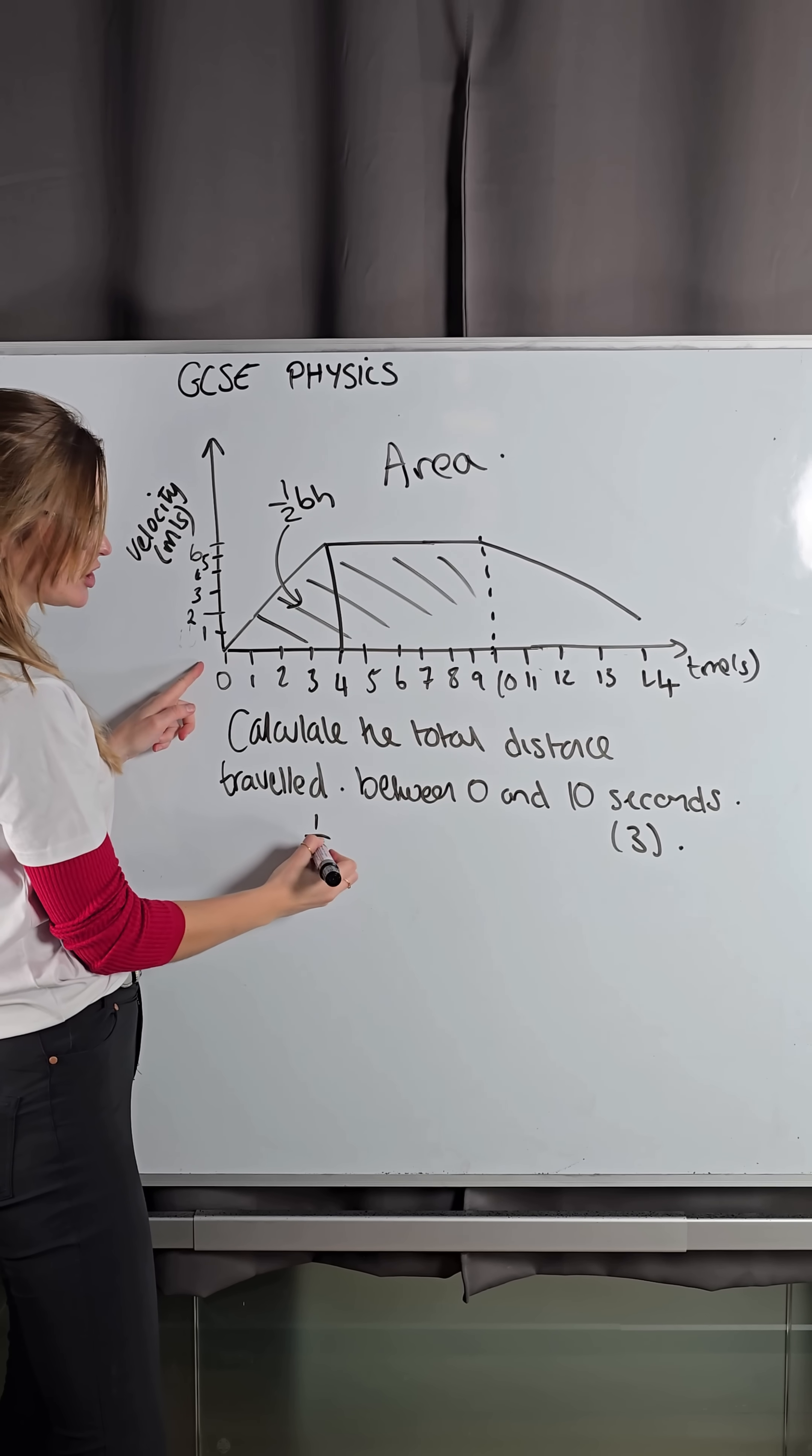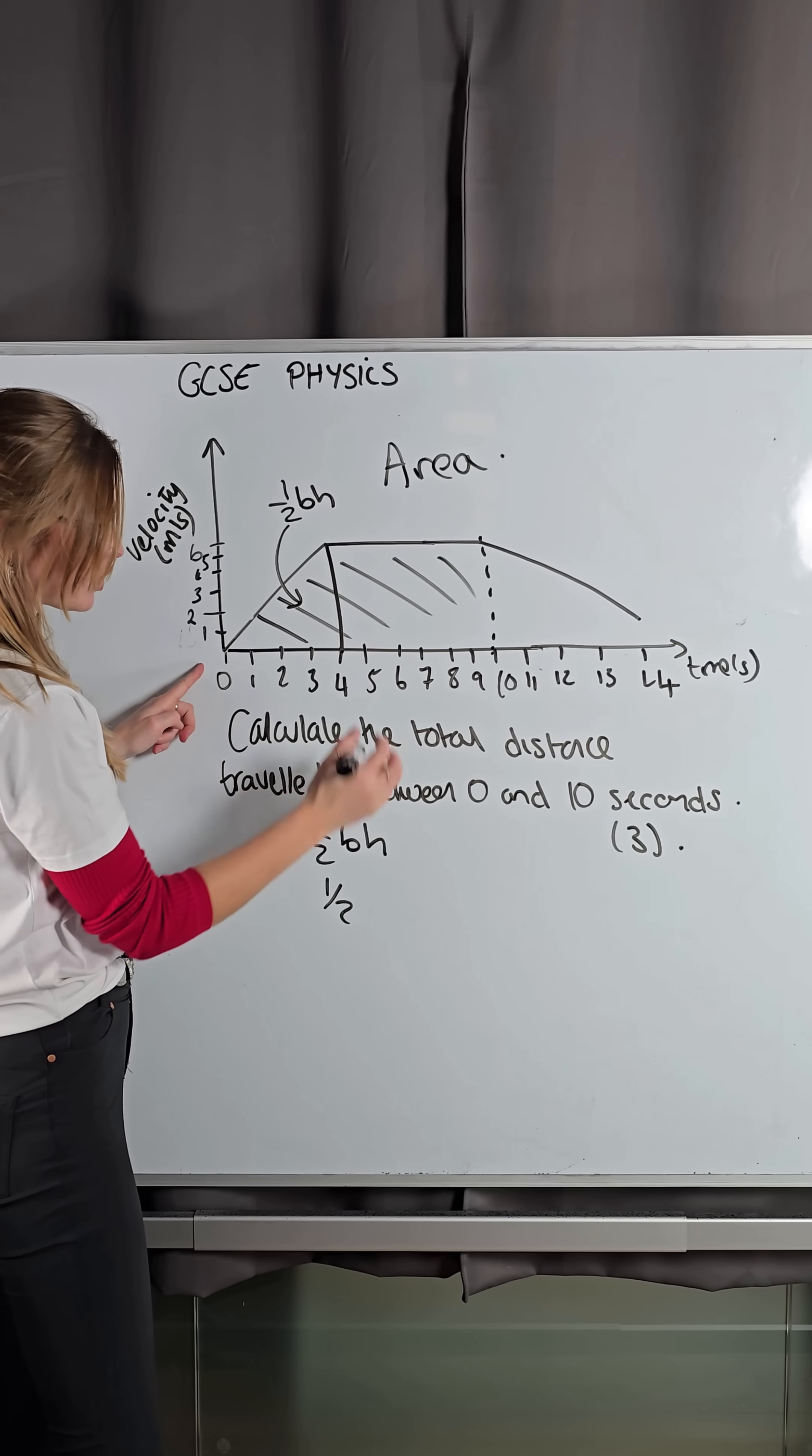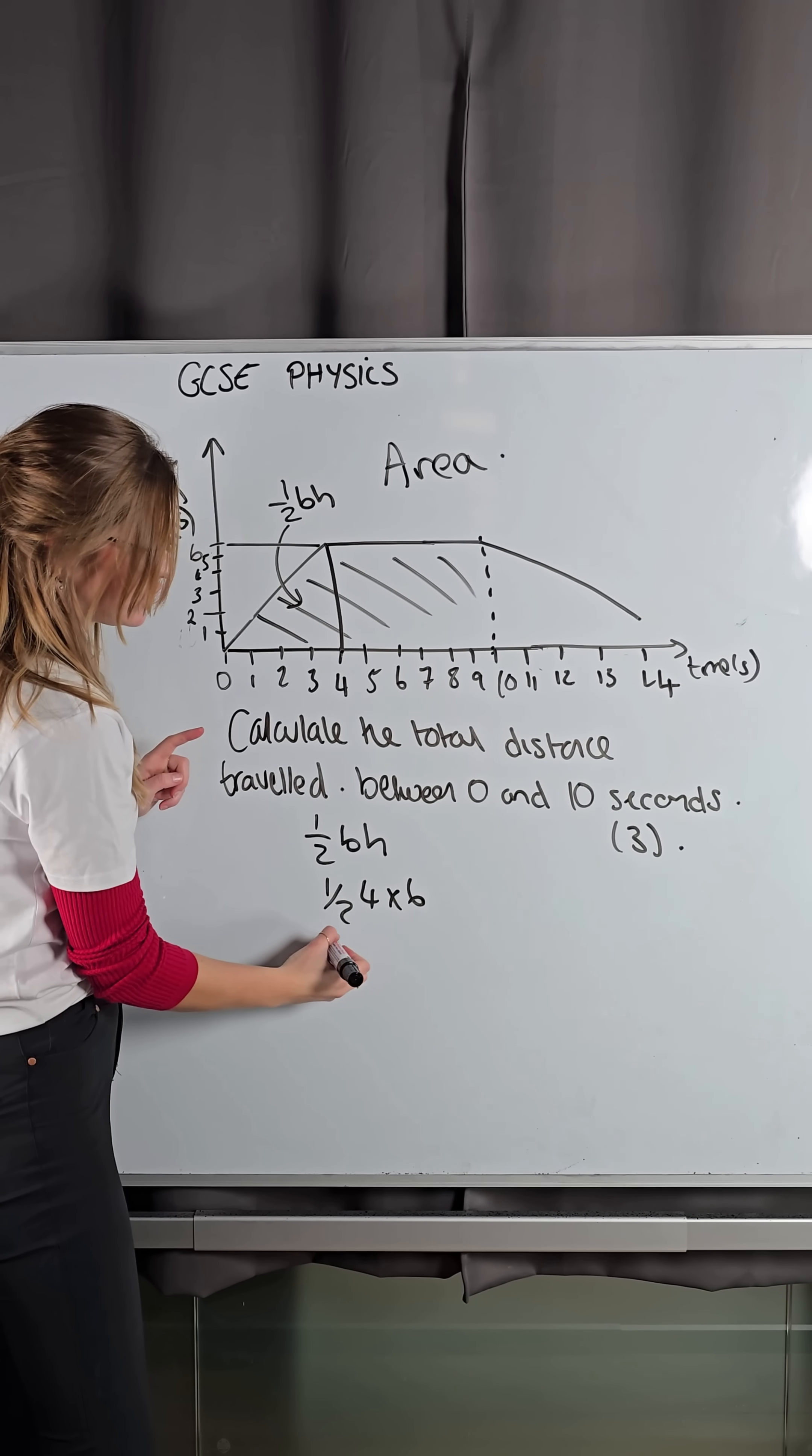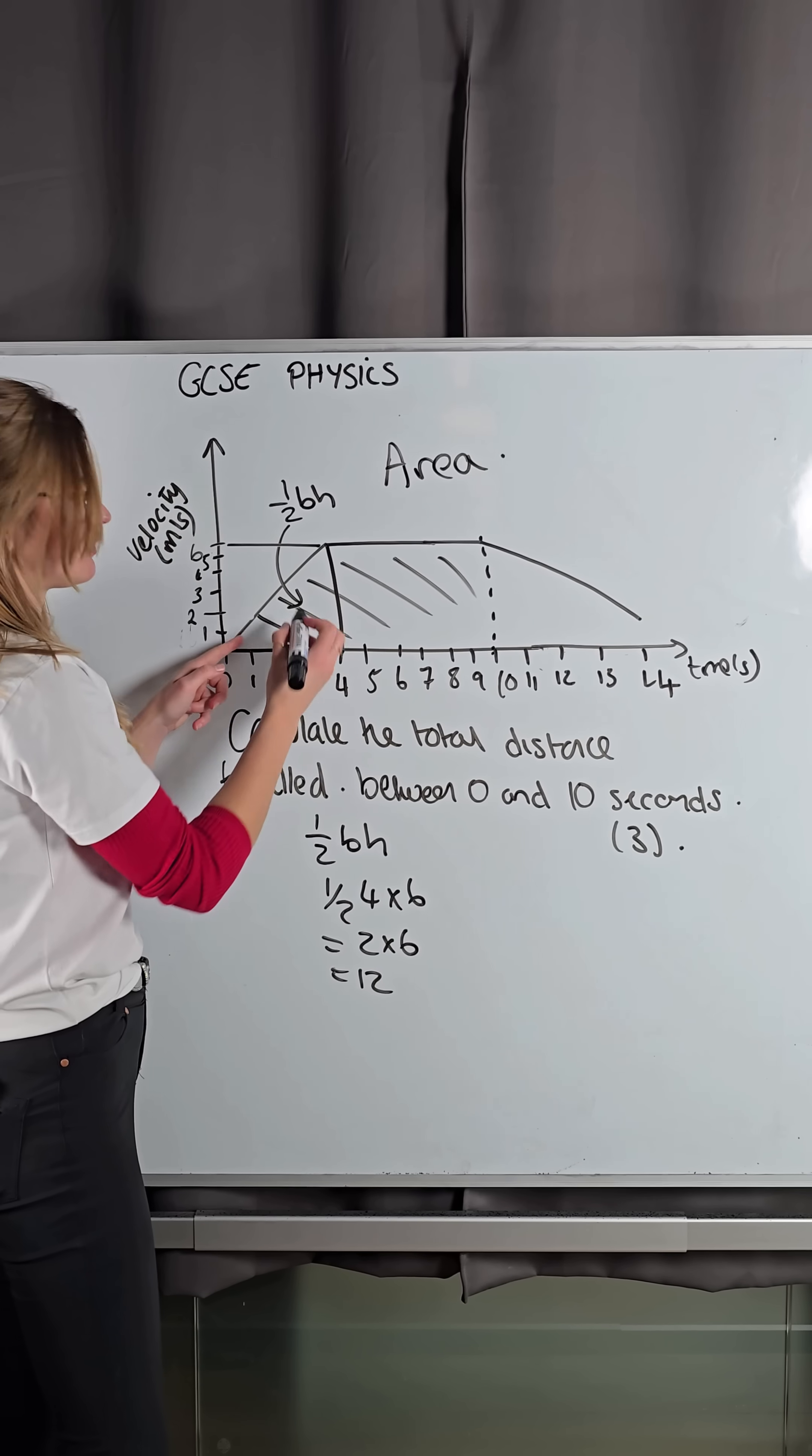So I want to find the area of my triangle, which is a half of my base times my height. So a half of my base is from 0 to 4. So a half times 4 times the height, which goes from 0 up to 6. So times by 6. So a half of 4 is 2. Times by 6 gives me 12. So that's the area of this triangle is 12.